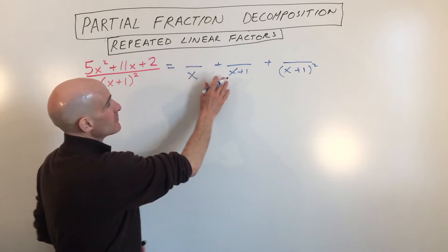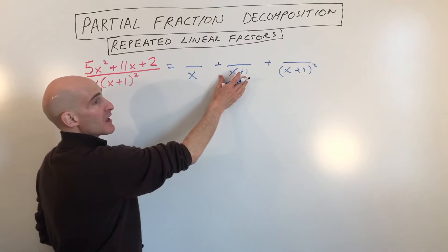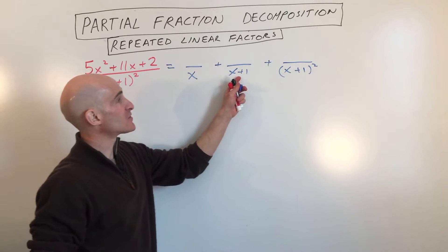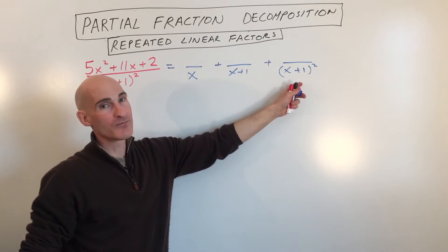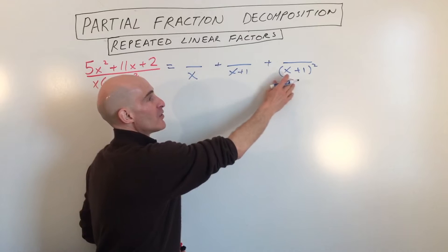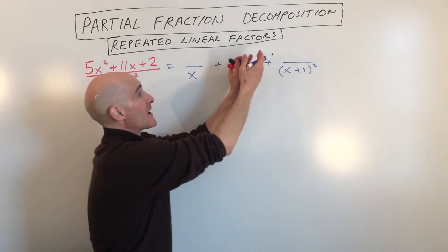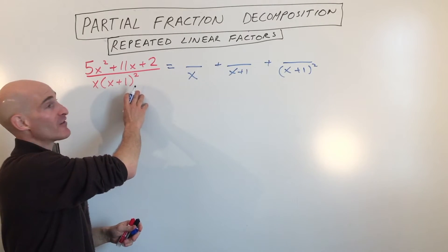Okay, if we just had, you know, x plus 1 squared and not x plus 1, or x plus 1 and not x plus 1 squared, we wouldn't be taking into account all the possible fractions originally before we combine them into one fraction to get the fraction that we have here.